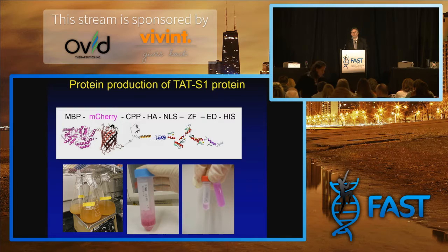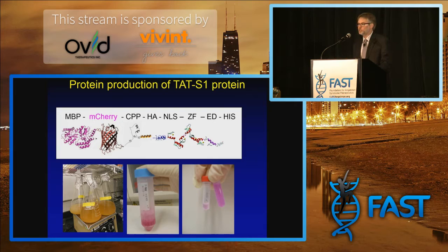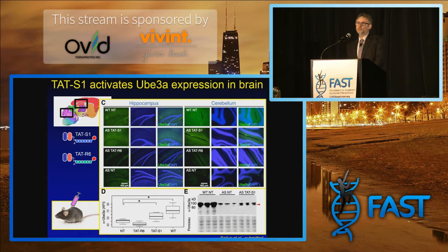I've talked about this a few times before, and I mentioned that we were able to build a protein. We can inject this artificial transcription factor into UBE3A-deficient mice, an Angelman mouse model.